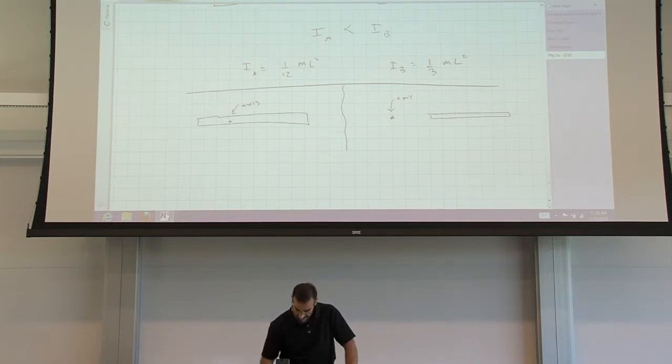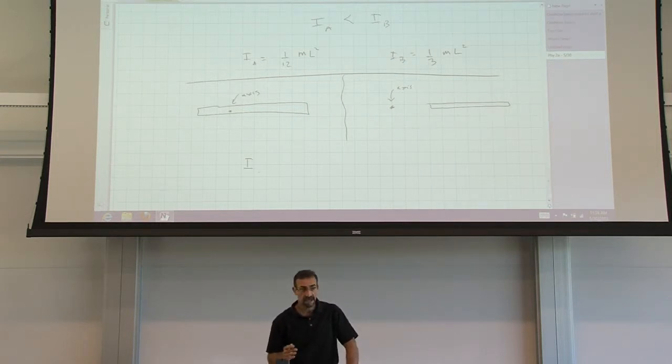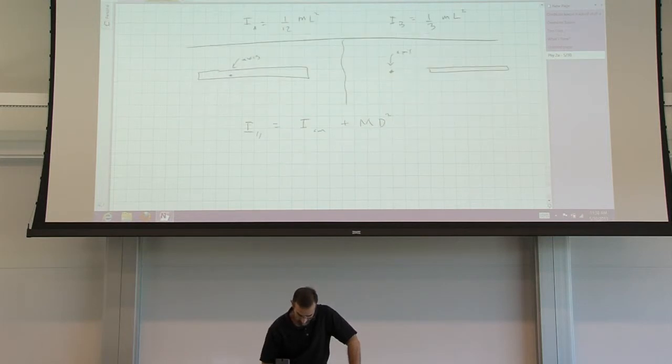So we use the parallel axis theorem. The parallel axis theorem tells us that the rotational inertia about some axis that's parallel to the axis that goes through the center of mass, that's our parallel one, is equal to I for the center of mass plus the mass of this thing times D squared, where D is the distance between the two axes.